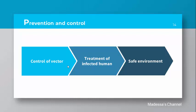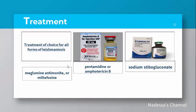For prevention and control: number one is vector control — controlling the sand fly population in the environment. Number two is treatment of infected persons. Number three is maintaining a safe environment free from such insects. Treatment options include various drugs such as Amphotericin B, Pentamidine, Sodium Stibogluconate, and Miltefosine. This is all about leishmaniasis.